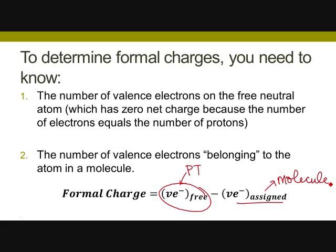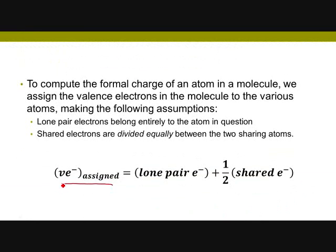To compute the assigned value, you take the lone pair electrons around the atom plus one half of the shared electrons — that's one half of all electrons in bonds plus all the unshared dots around it. We compute the assigned and then plug it in to compute the formal charge.